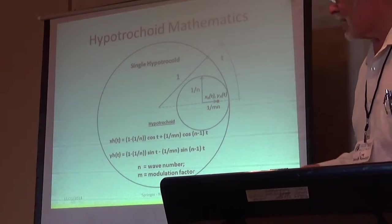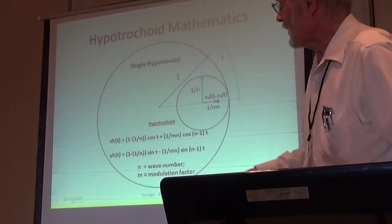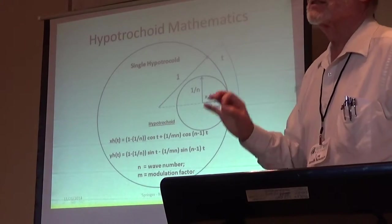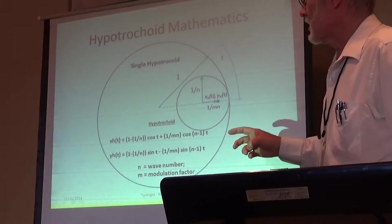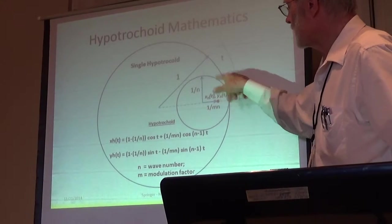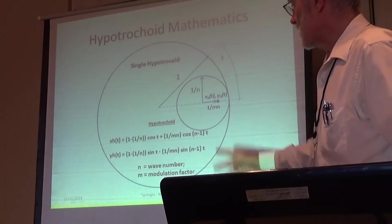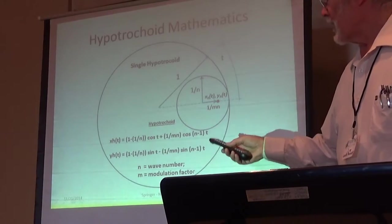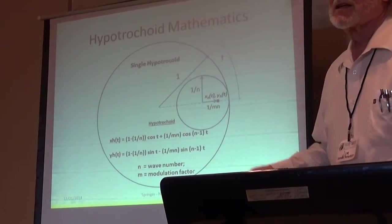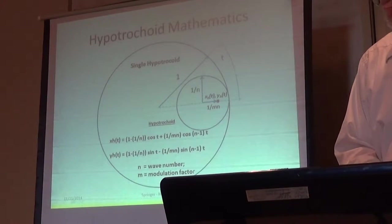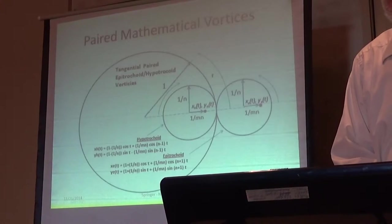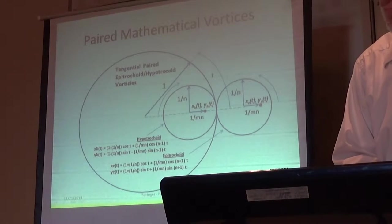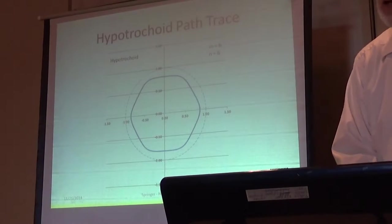Now, here's some mathematics. XHT should be X subscript H for hypotrochoid. So it's the X value as a function of time, this equation. And he put in wave numbers to make this work. Six and six gives a nice hexagon.